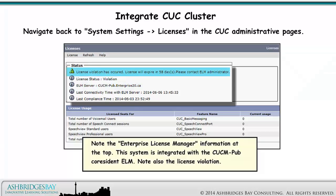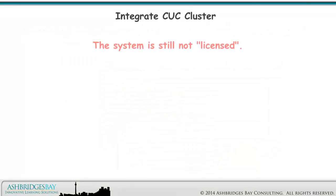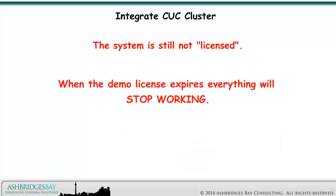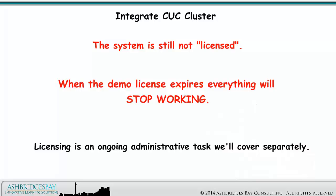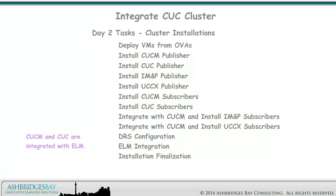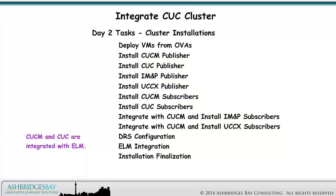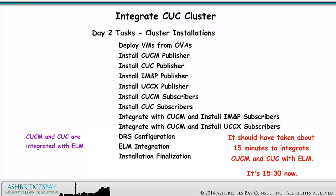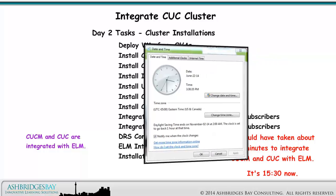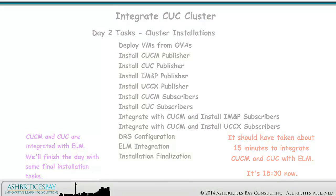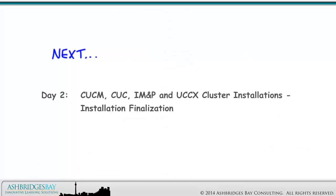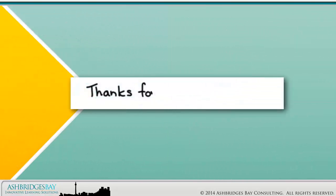Note also the license violation. The system is still not licensed. When the demo license expires, everything will stop working. Licensing is an ongoing administrative task that we'll cover separately. CUCM and CUC are integrated with ELM — it should have taken about 15 minutes, and it's 15:30 now. We'll finish the day with some final installation tasks. Coming up next: CUCM, CUC, IM&P, and UCCX cluster installation finalization. Thanks for watching!